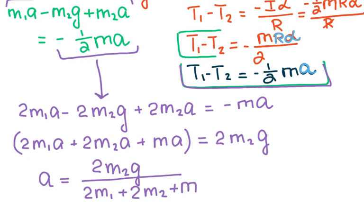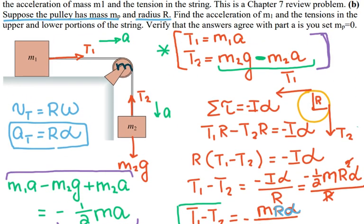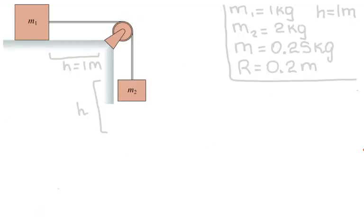Once we know the acceleration, we can go back and find the tensions at the top and bottom of the pulley. I'll now walk through these different question types with actual numbers, solving each type step by step. In this case, the masses move without friction a distance H — the top one to the right and the bottom one downward — and I look at the energy.